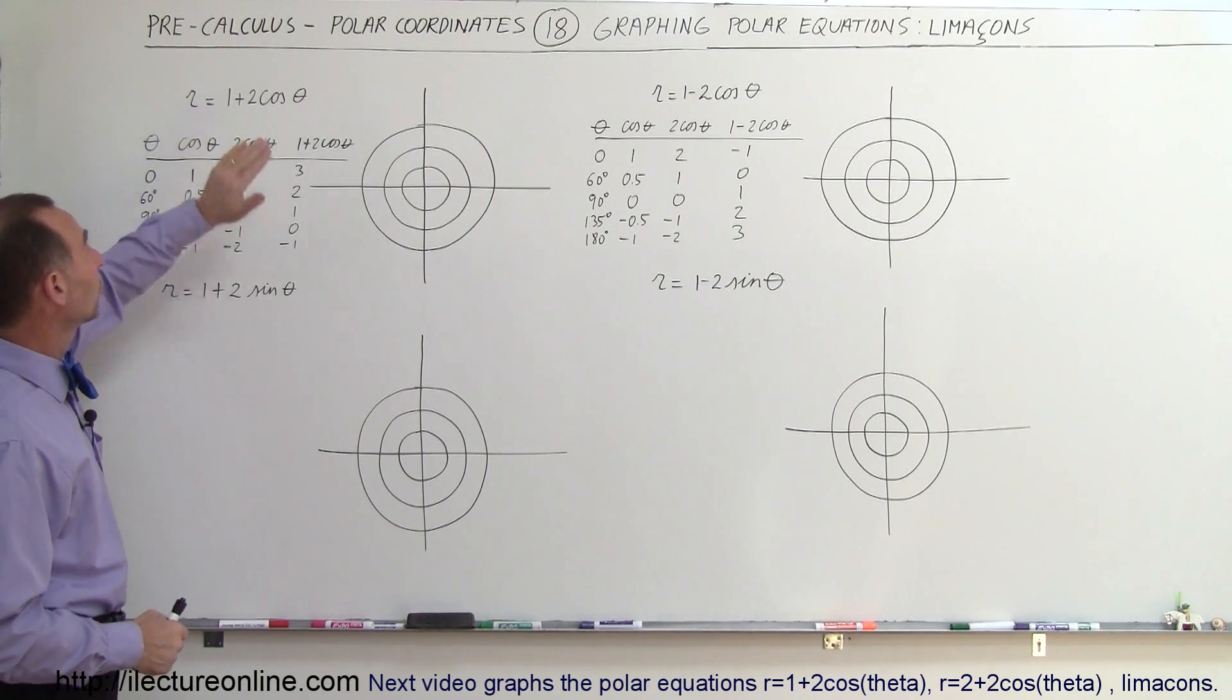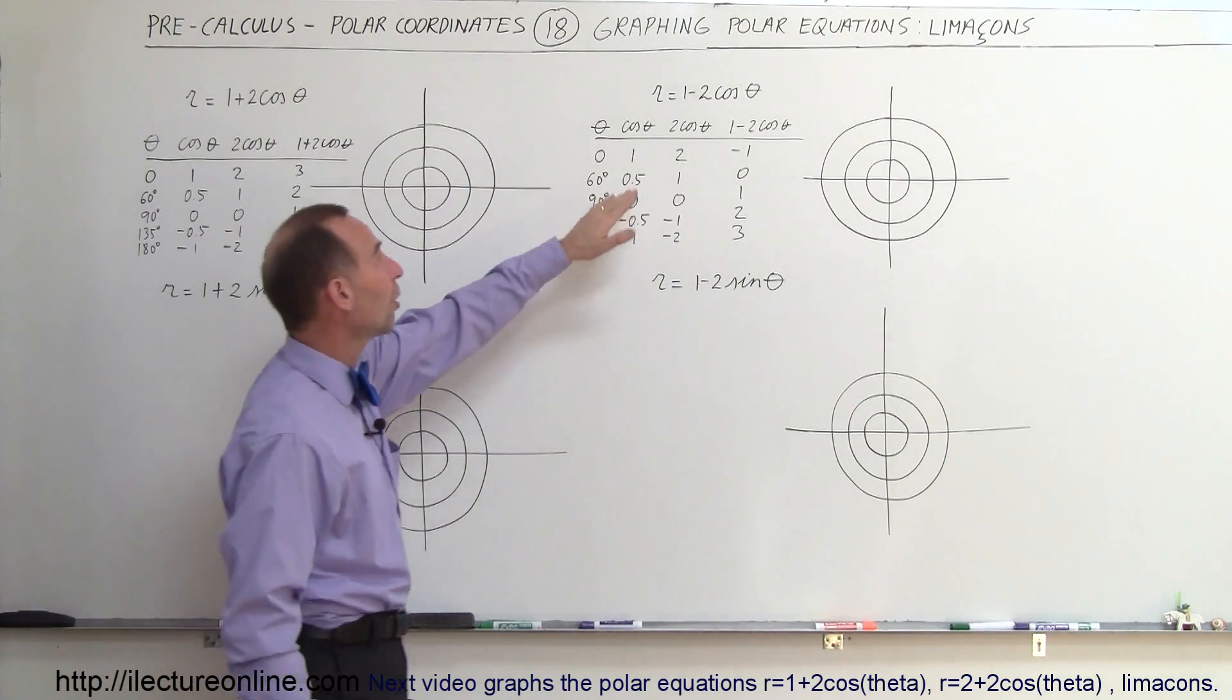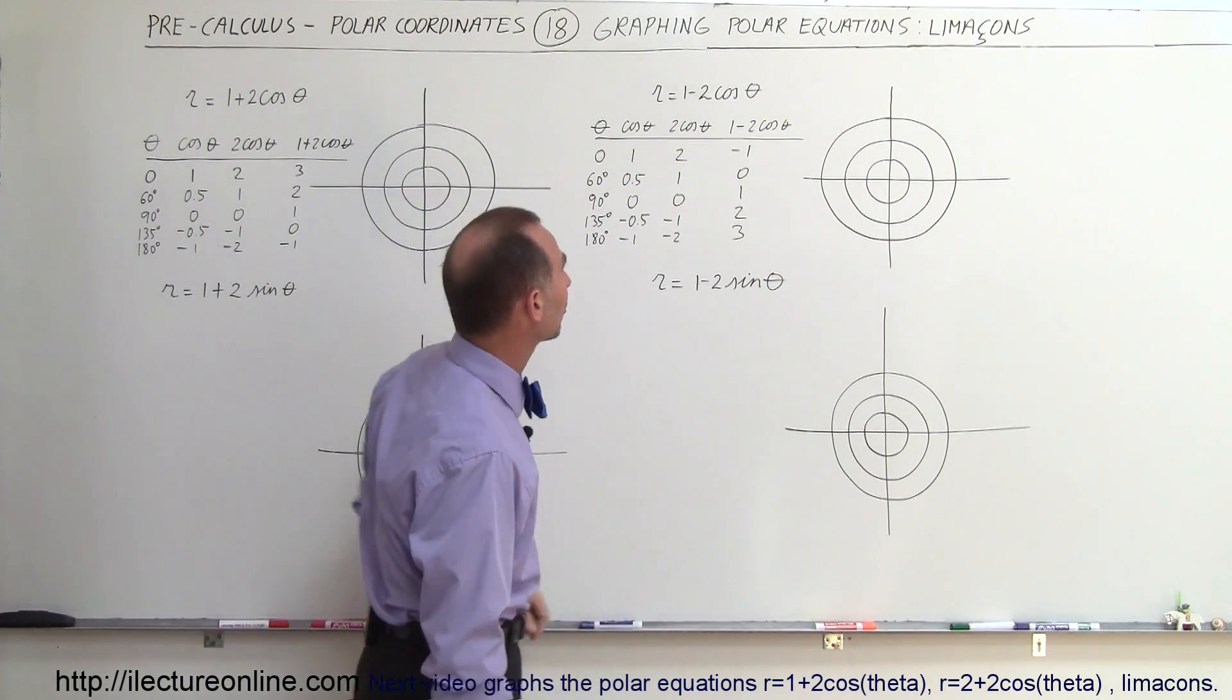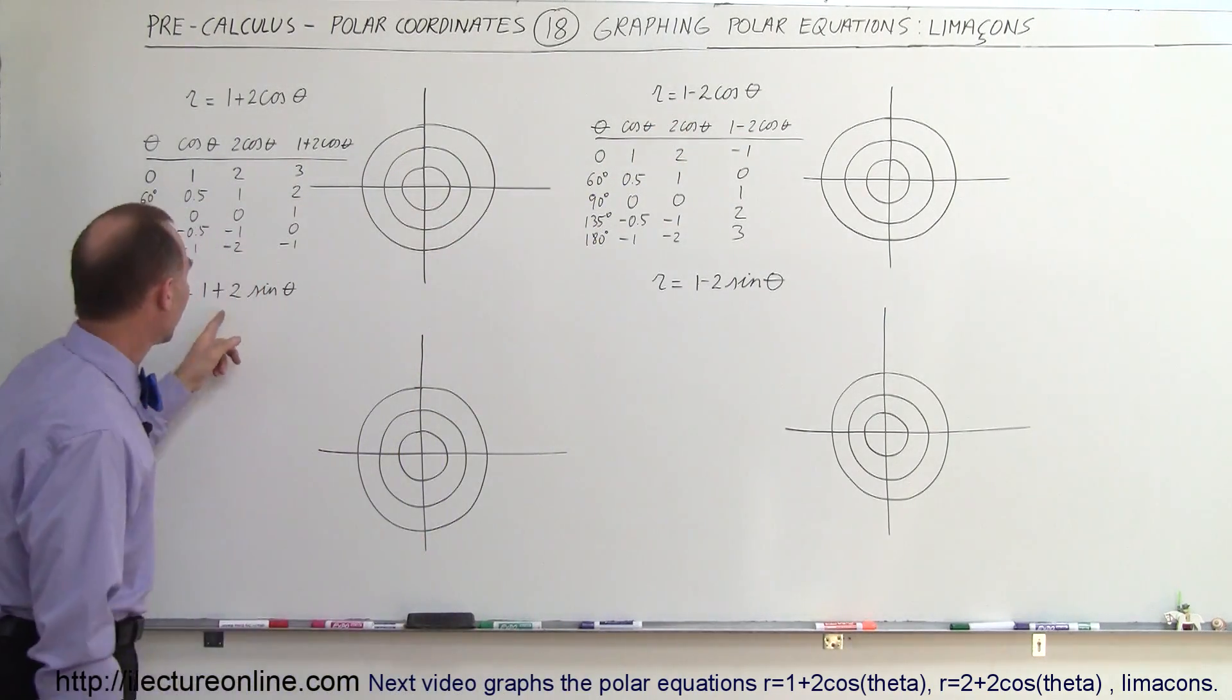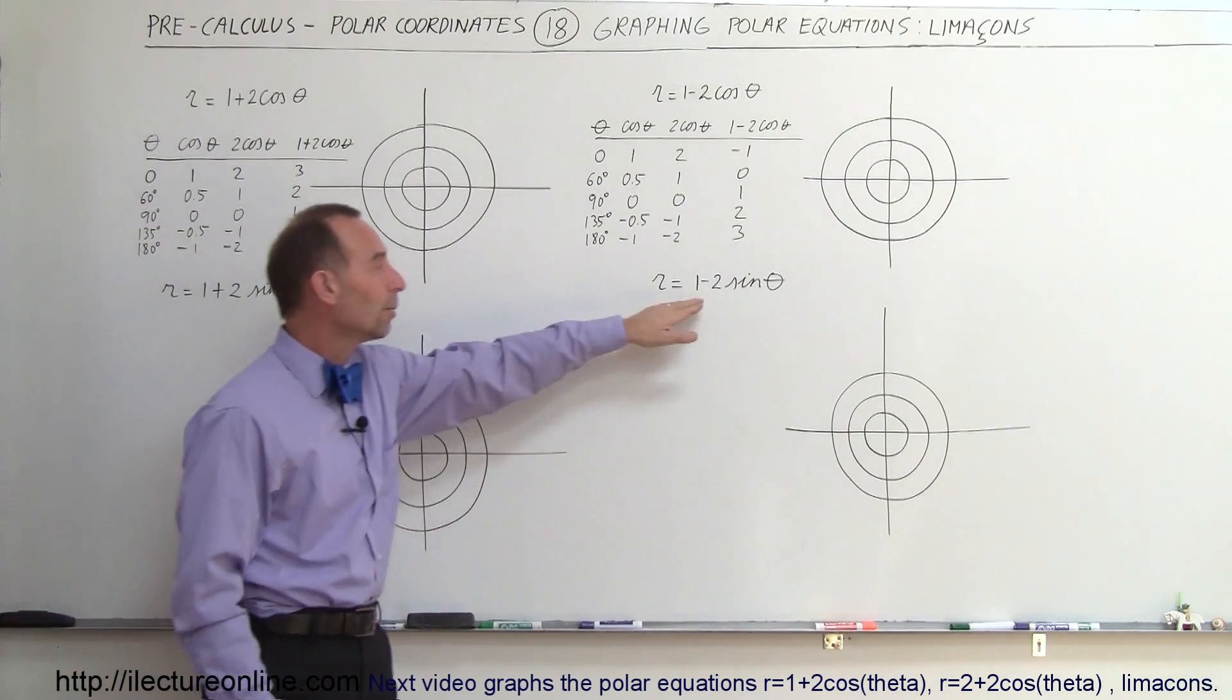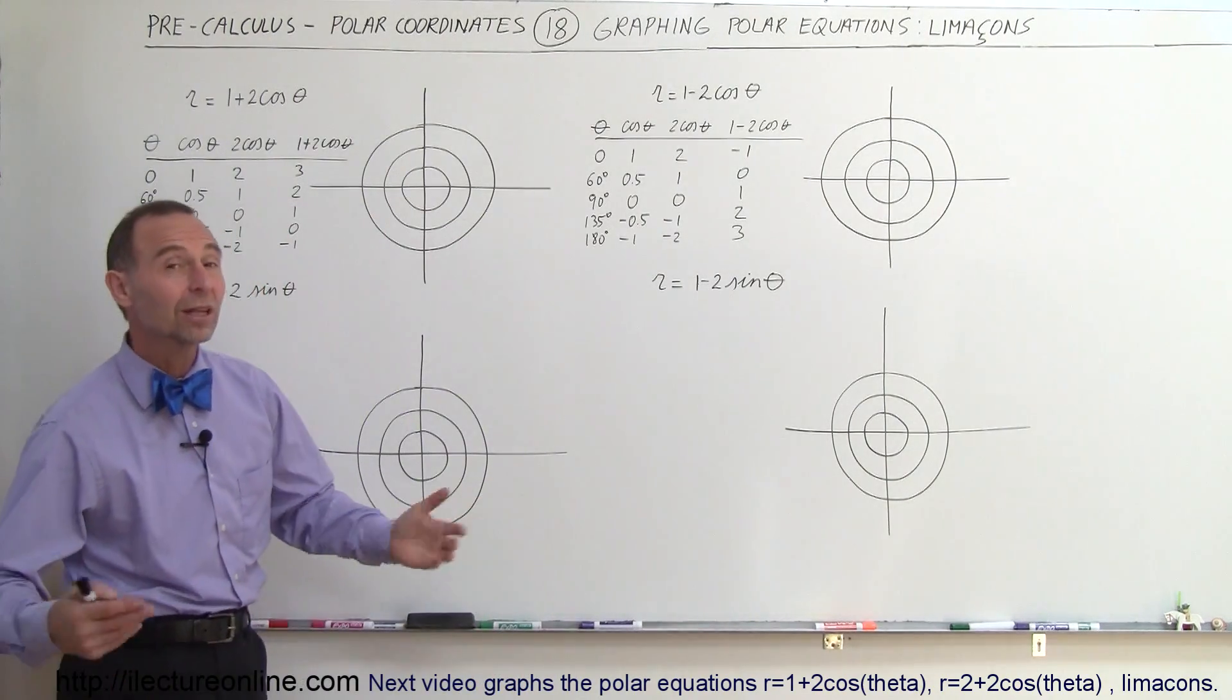So here we have r equals 1 plus 2 times the cosine of theta. Here we have r equals 1 minus 2 times the cosine of theta. Here we have 1 plus 2 times the sine of theta, and 1 minus 2 times the sine of theta. So what did it look like?